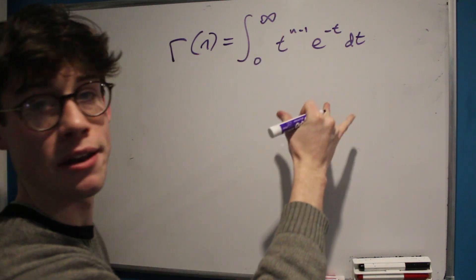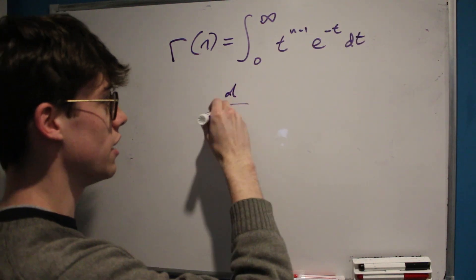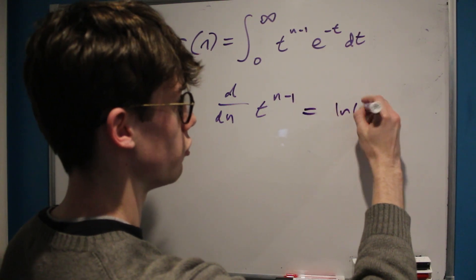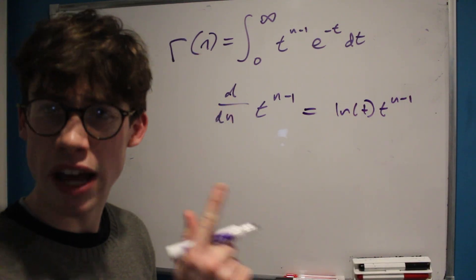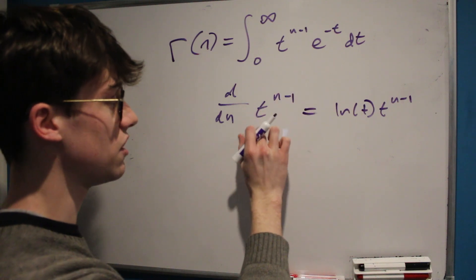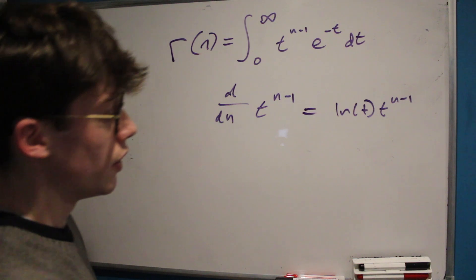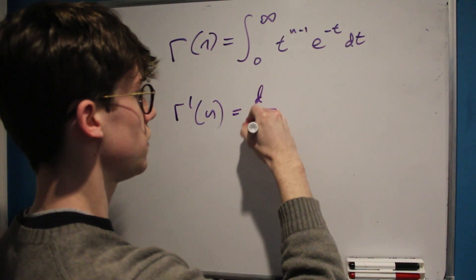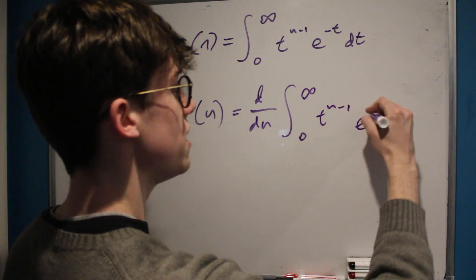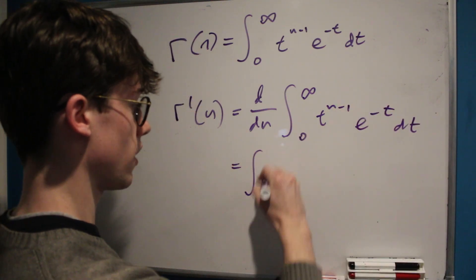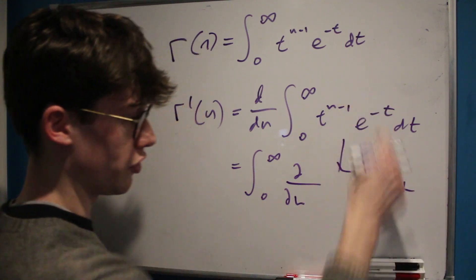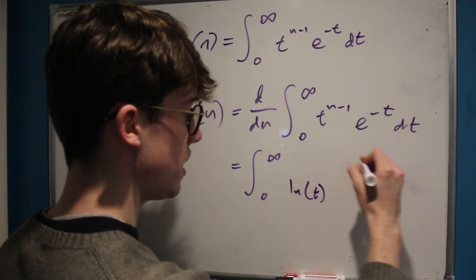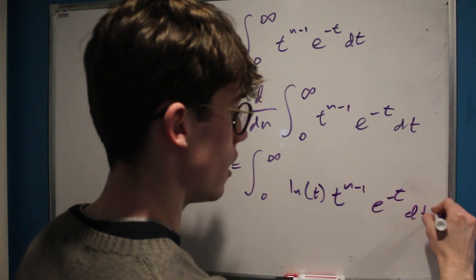Yes there is: we can differentiate with respect to n, because e to the negative t is a constant in that case, and the derivative with respect to n of t to the n minus one equals the natural log of t times t to the n minus one. Don't get confused here — we can't use the power rule because it's not the base we're differentiating with respect to, it's the exponent. So we can define gamma prime of n as the derivative with respect to n of the integral, and then use differentiation under the integral sign. That gives us the natural log of t times t to the n minus one times e to the negative t, with respect to t.